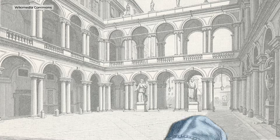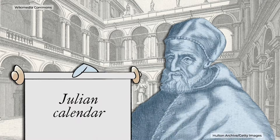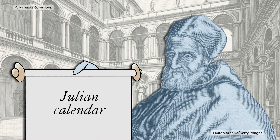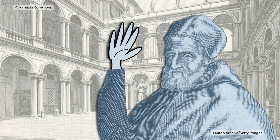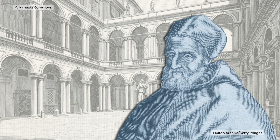the leap days he added overcorrected. By the time it got to Pope Gregory's day and age, the calendar was off by 14 days. So he reformed it and added some new rules.